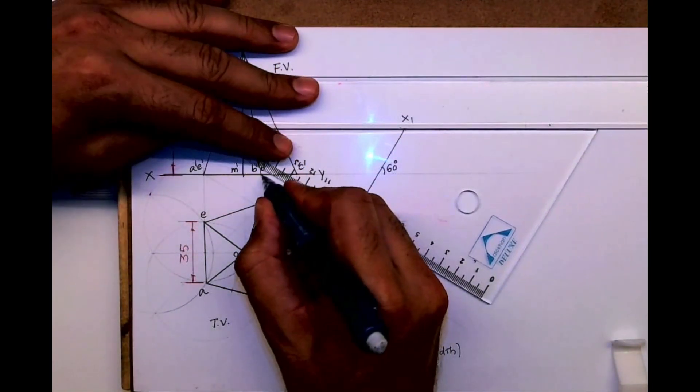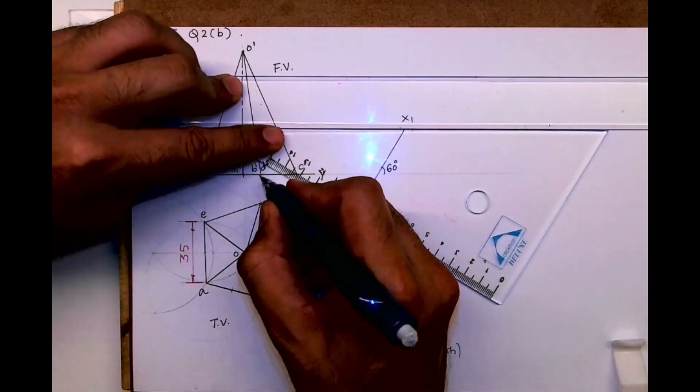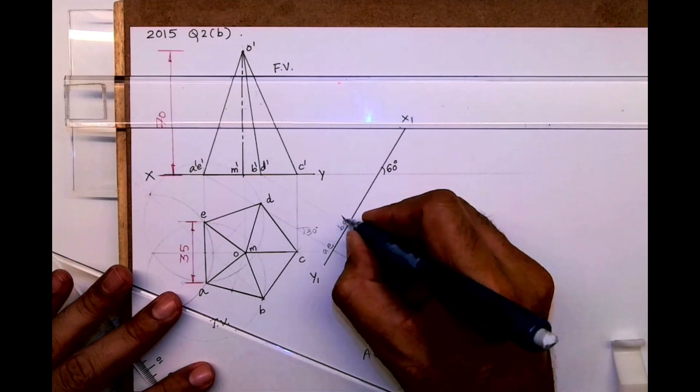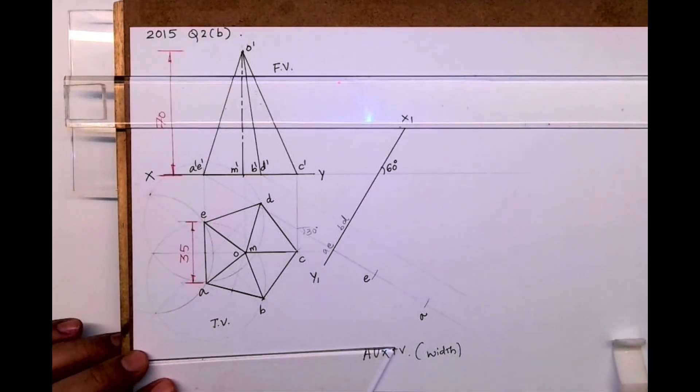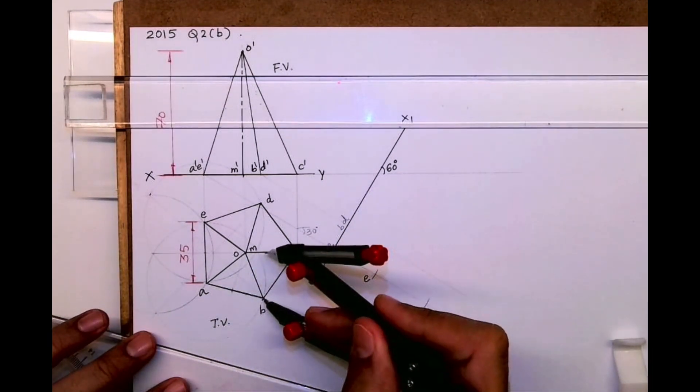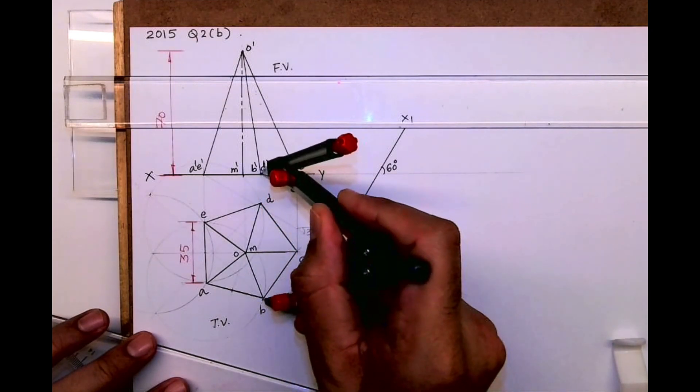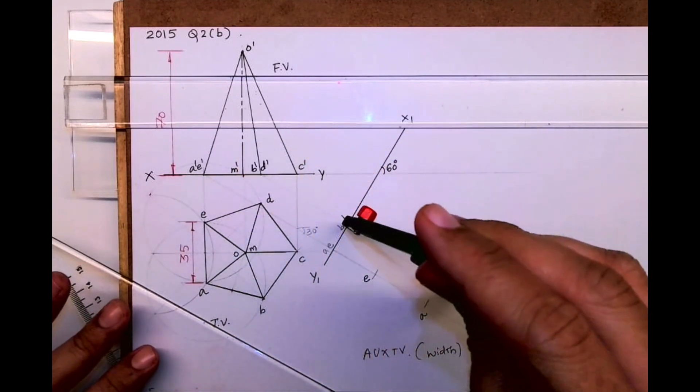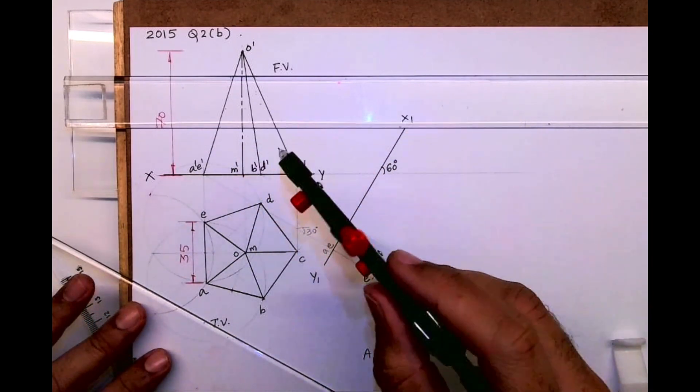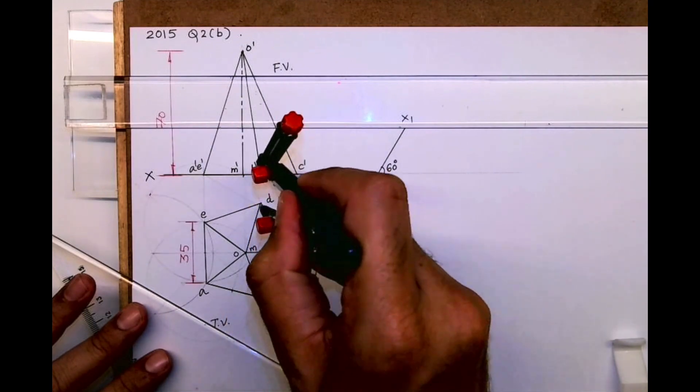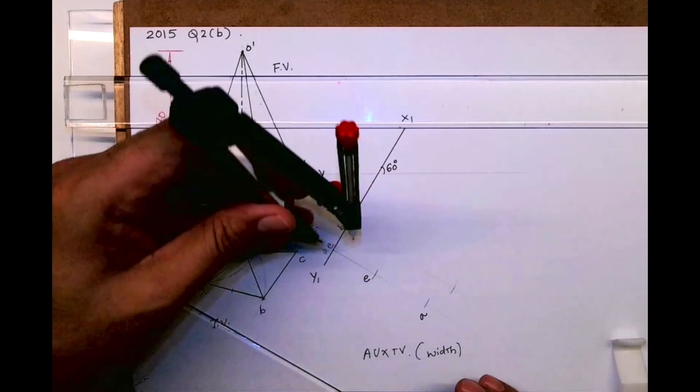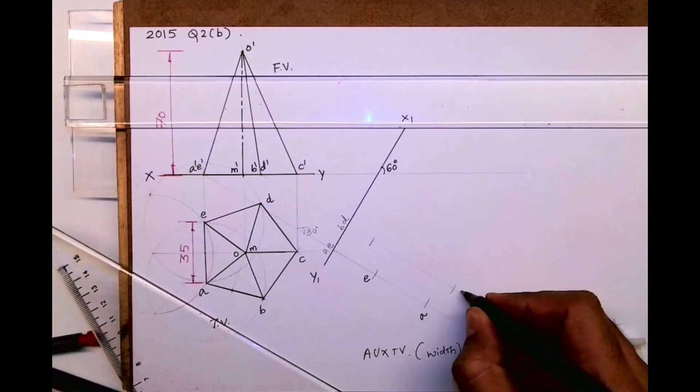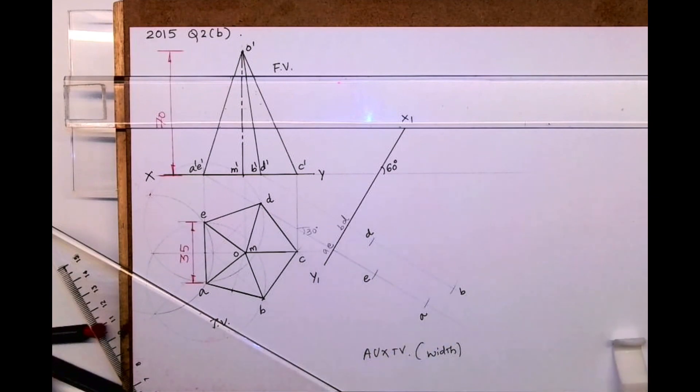After that, I will extend B' and D', the bottom points. This is BD. XY to B, and from here cut it over here. Then again XY to D. So this is B and this is D.